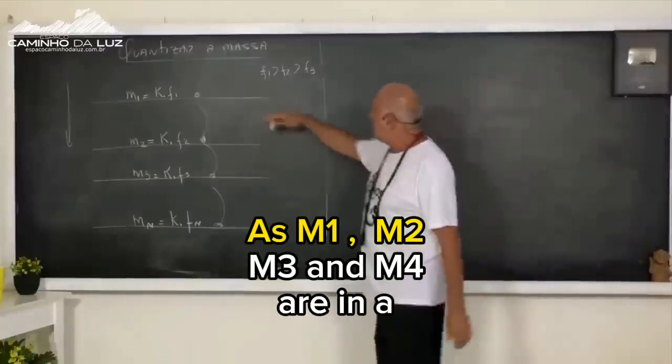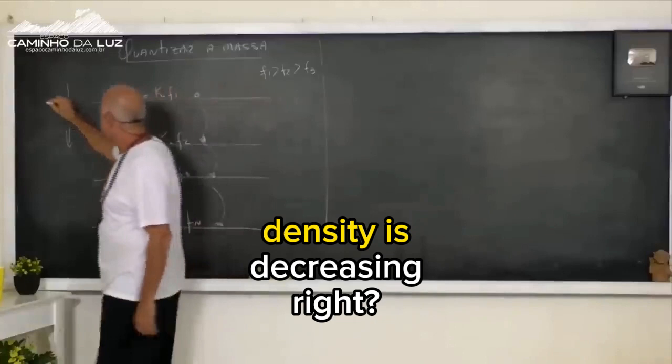As M1, M2, M3, and M4 are in a relationship of density, density is decreasing.